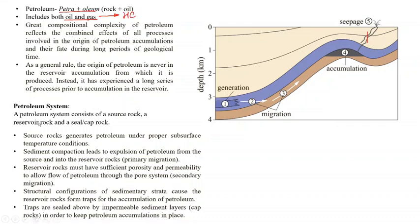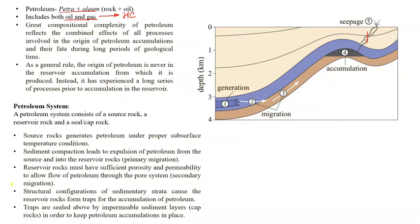Petroleum has a very complex composition, and this complexity tells us that petroleum generation is not an easy process. It is not a simple process. It requires a lot of processes involved in the origin of petroleum, then accumulation of petroleum, and over long periods of time, what happens to that petroleum.